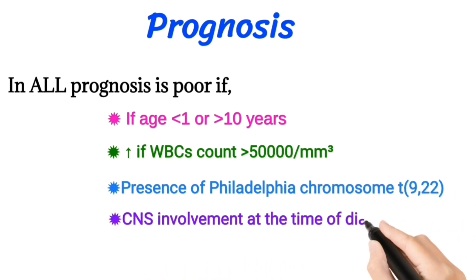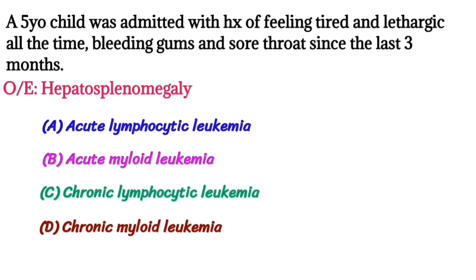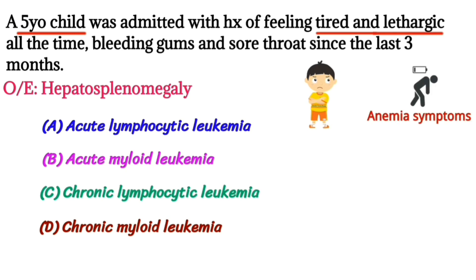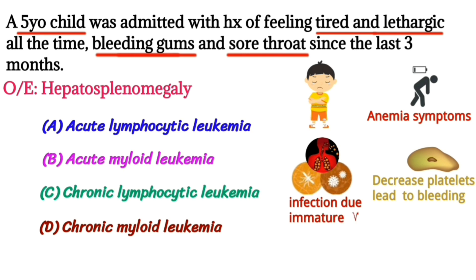Clinical question: a five-year-old child was admitted with a history of feeling tired and lethargic, bleeding gums, and sore throat for the last three months. On examination, hepatosplenomegaly was found. Please answer in the comment box. If you like my videos, please subscribe to my channel and press the bell icon.